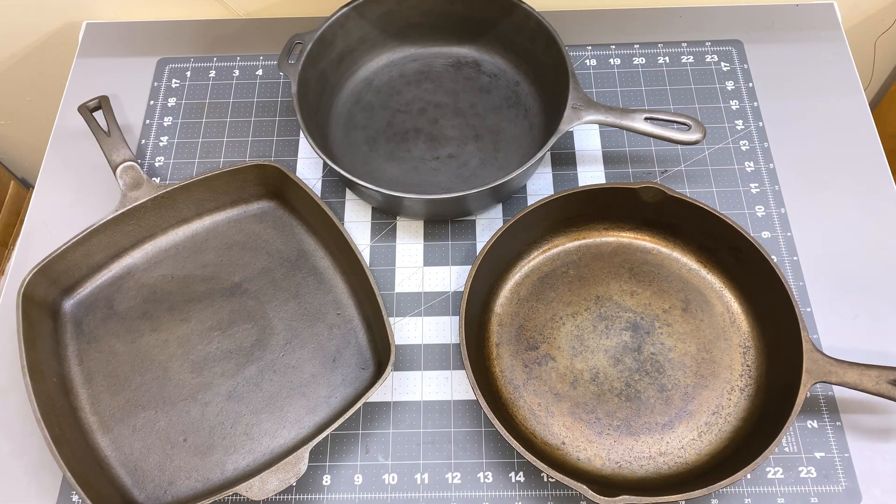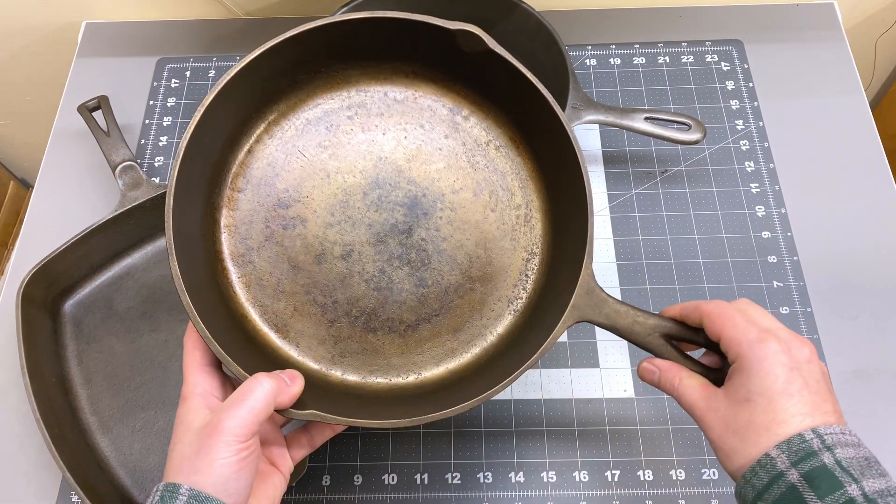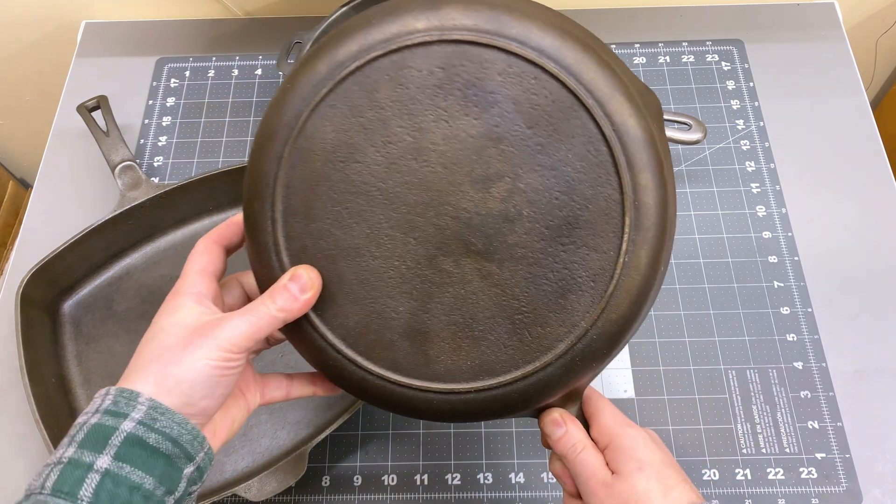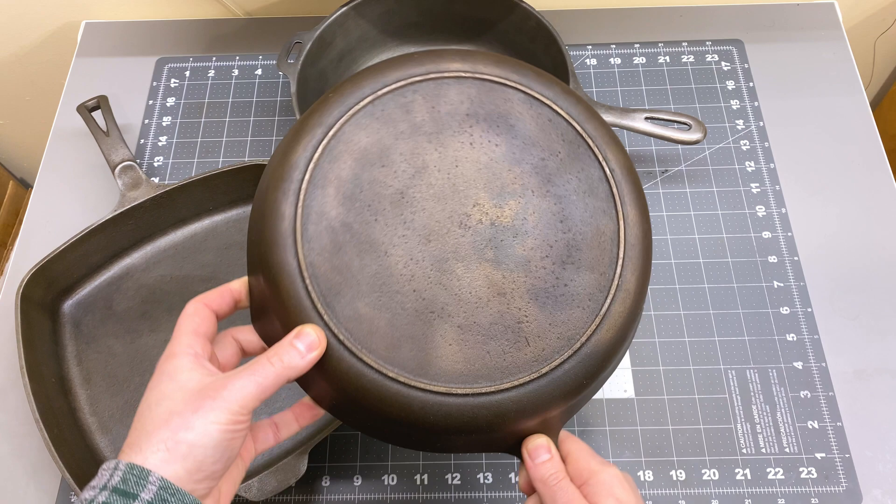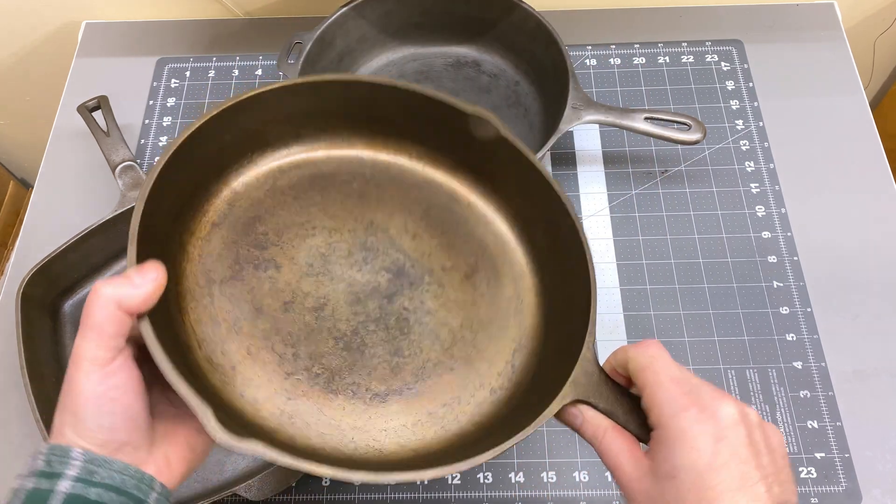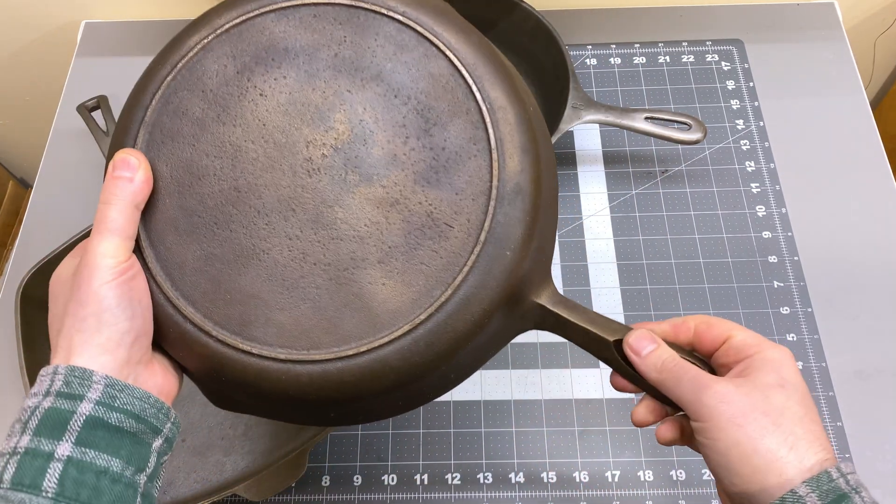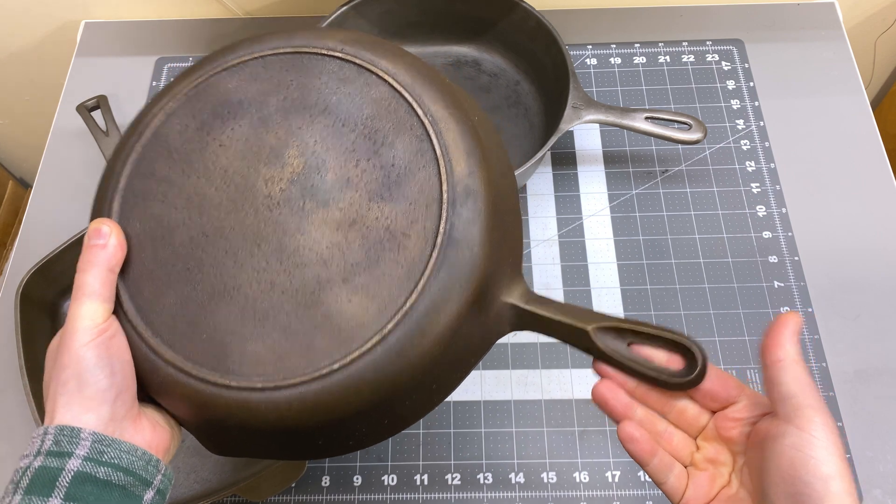I want to test some old cast iron pans that I've recently picked up for lead. So the first one is a BSR pan from the mid-60s I believe. It's got that distinctive back of the handle.